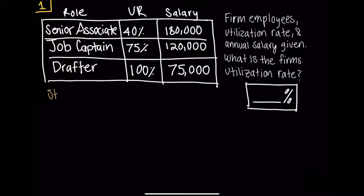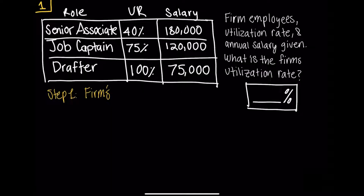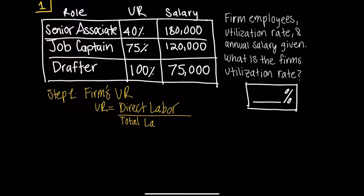Step one is figure out what the question is asking you to find. That is my first tip. What is the question asking you to find? In this case, we know it is asking us for the firm's utilization rate. In this step, I would go ahead and write out what the utilization rate formula is: direct labor divided by total labor. The problem here is given in terms of salary. It could have been given in terms of hours, but here we have it as salary. We must have prior knowledge that this can be in terms of dollars or in terms of hours.